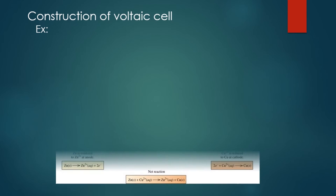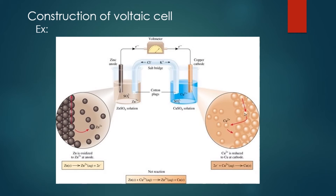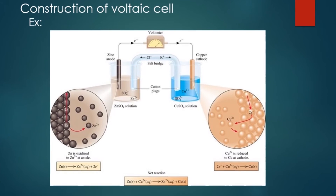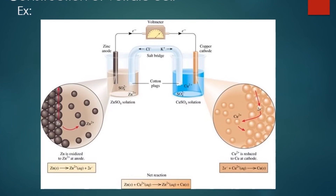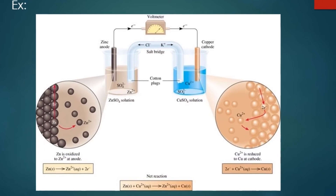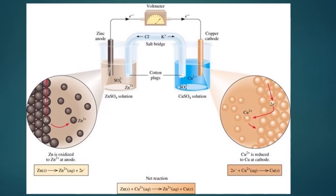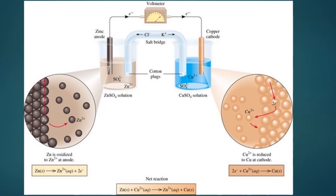This figure shows an example of a voltaic cell made of a zinc rod at the anode and copper at the cathode, both immersed in one of their solutions. The two rods are connected with a wire so the electrons can flow from the anode to the cathode. A salt bridge connects the solutions with each other so ions can migrate between the two half cells and complete the circuit.